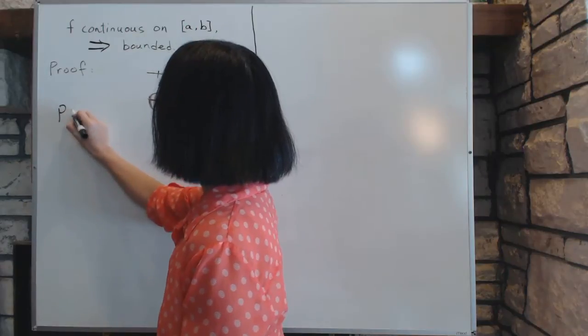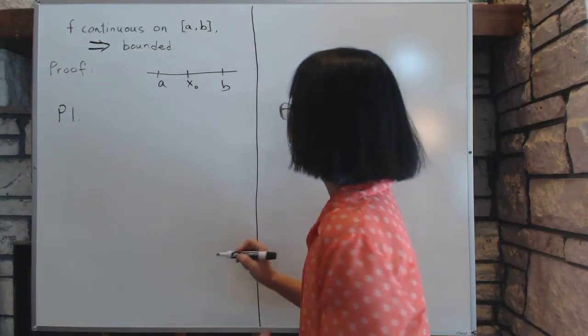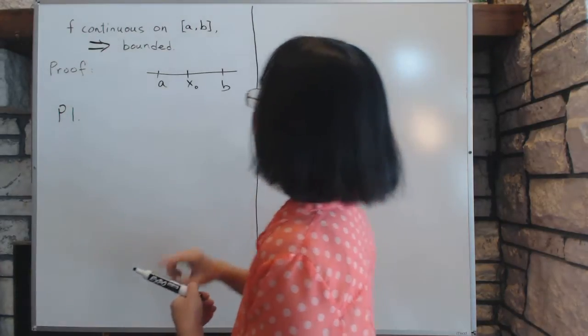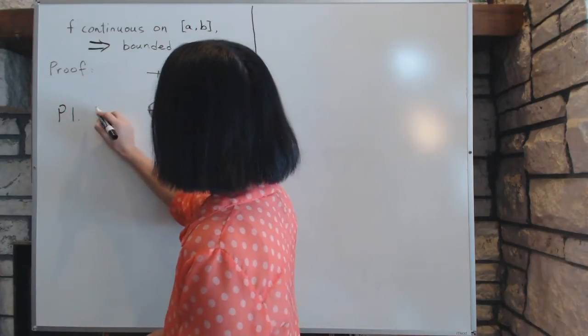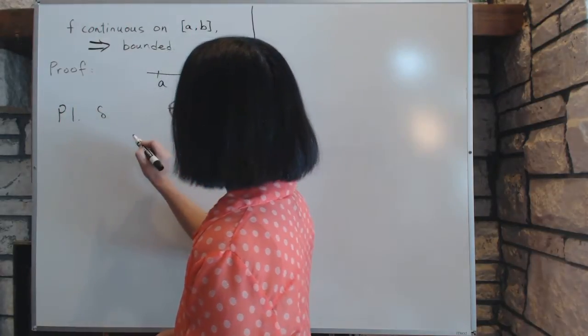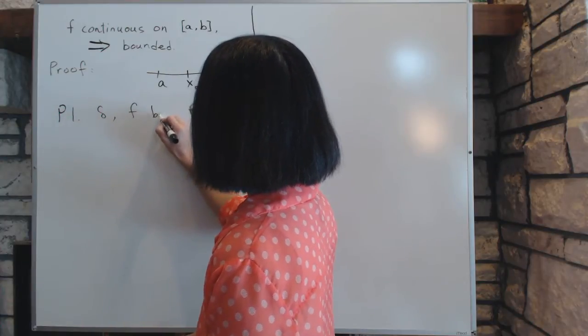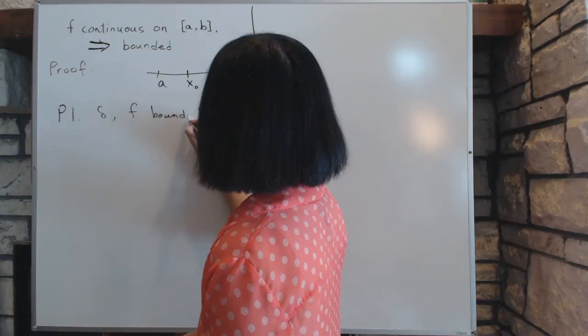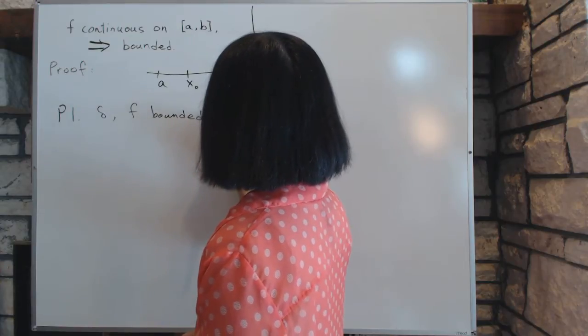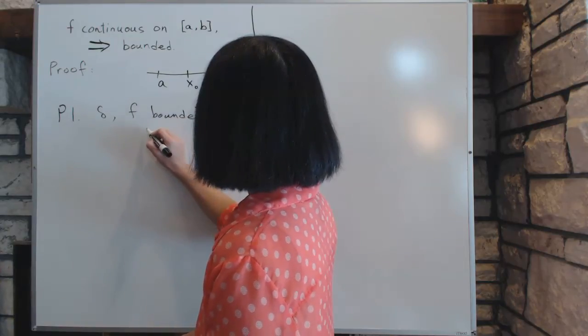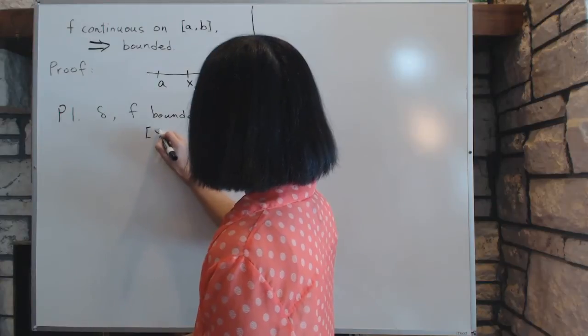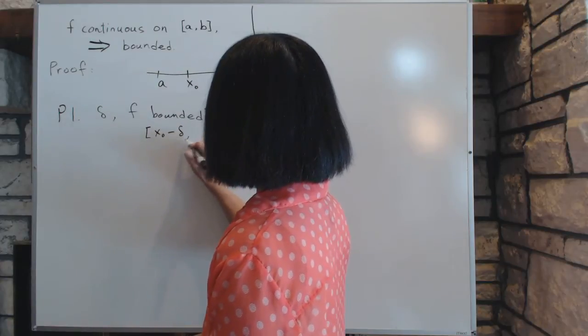The principle number one states that given x0, you can always choose a delta. There exists a delta such that f is bounded on the interval from x0 minus delta to x0 plus delta.